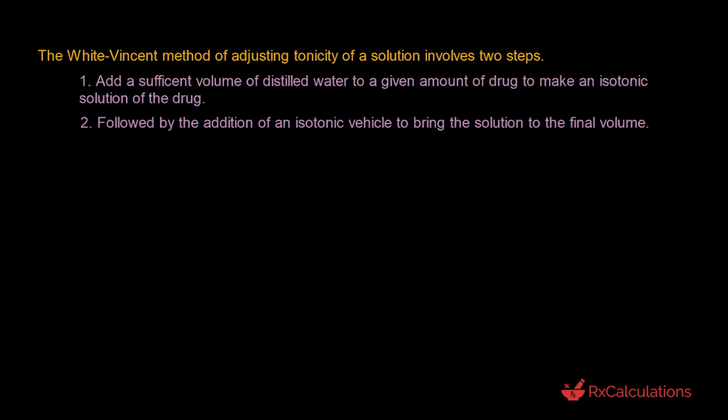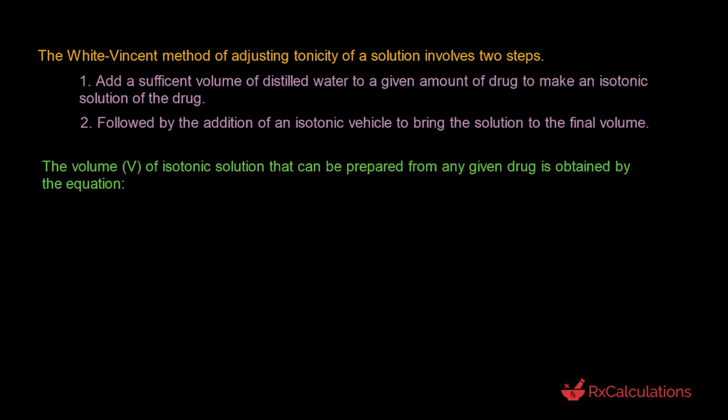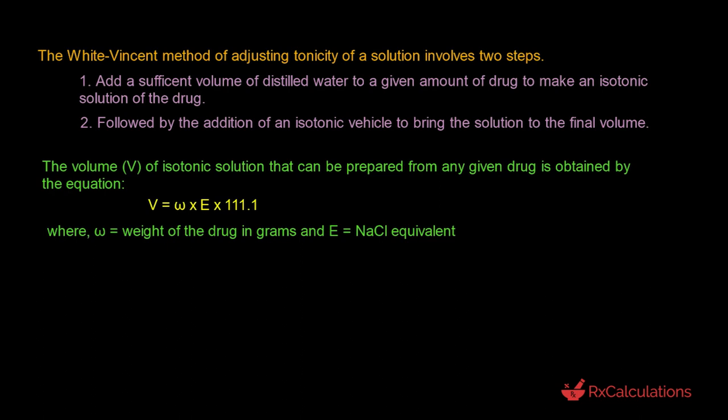The question arises as to how you determine the volume of distilled water needed to make a given amount of drug isotonic. The volume of isotonic solution that can be prepared from any given drug is obtained using a simple equation: V equals Omega times E times 111.1, where V is the volume of distilled water, Omega is the weight of drug in grams, and E is the sodium chloride equivalent.